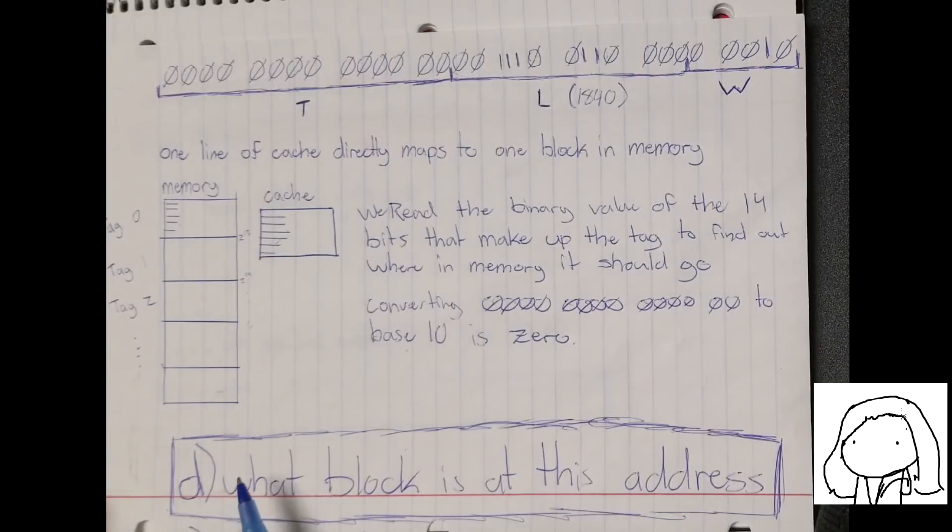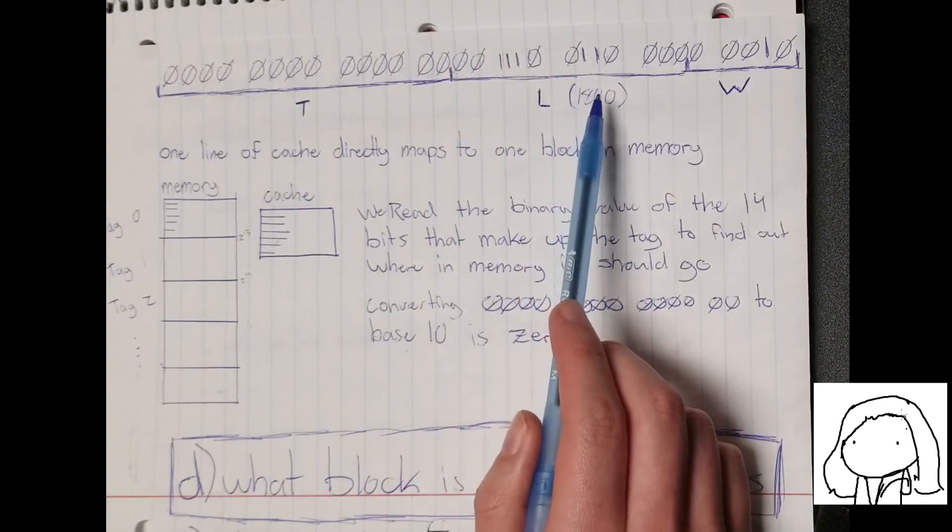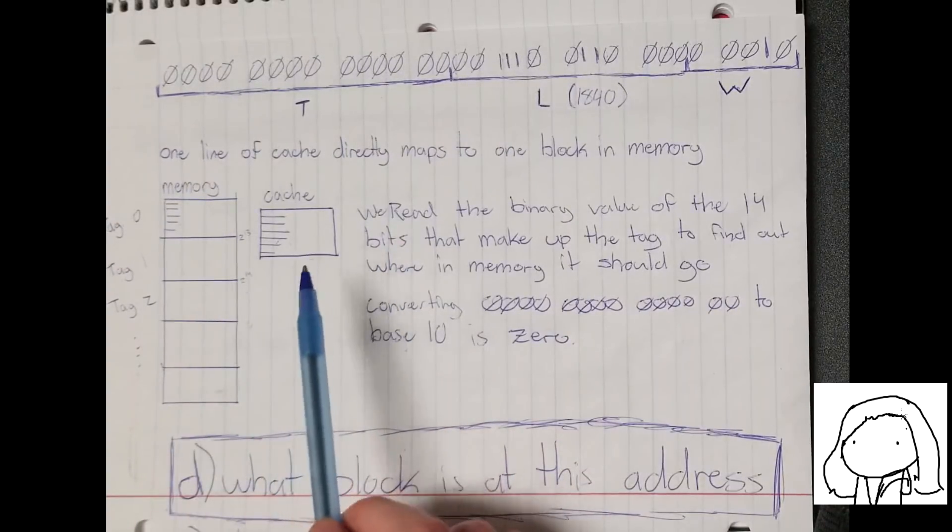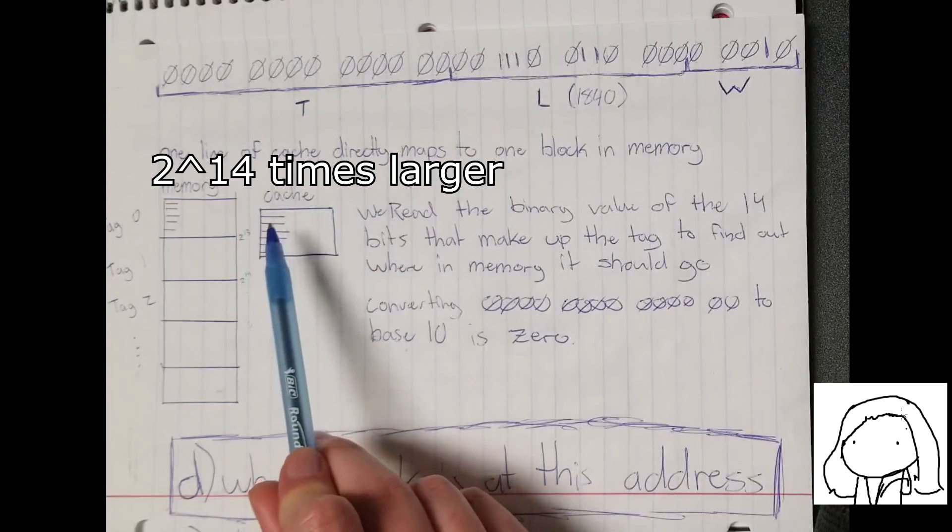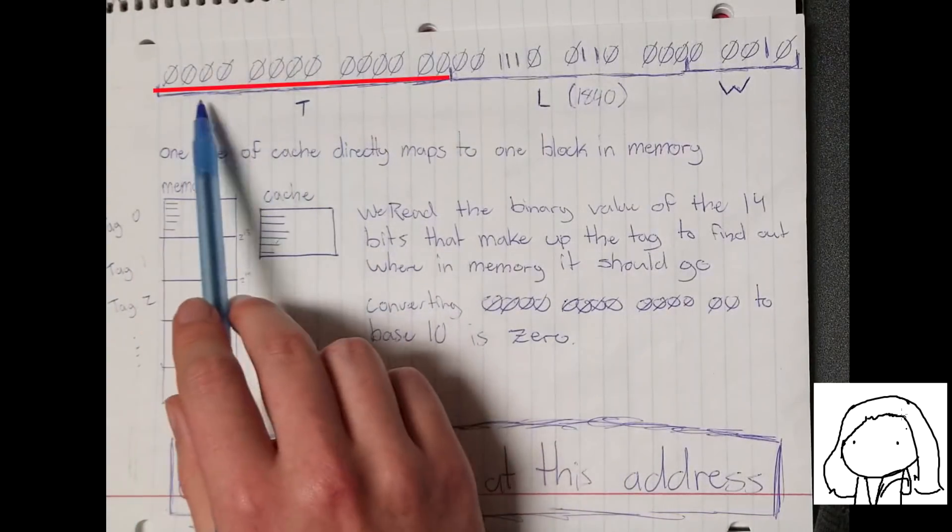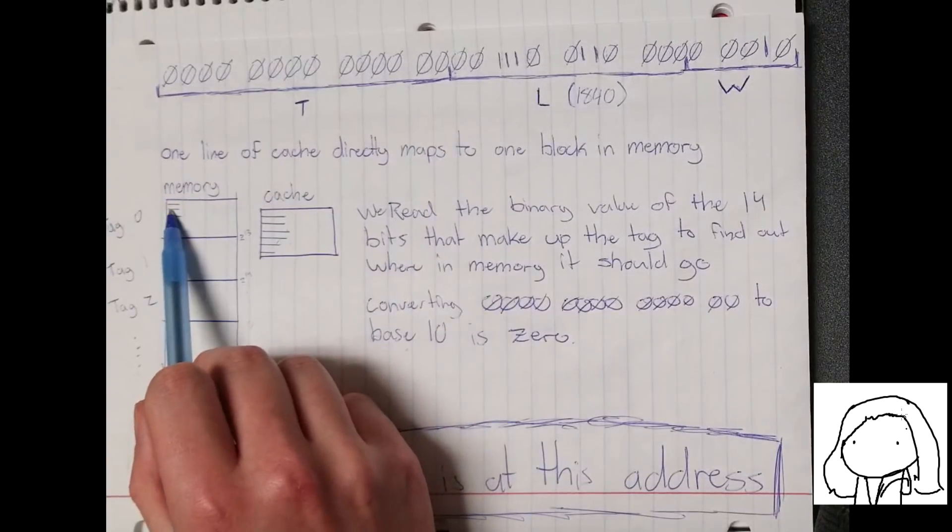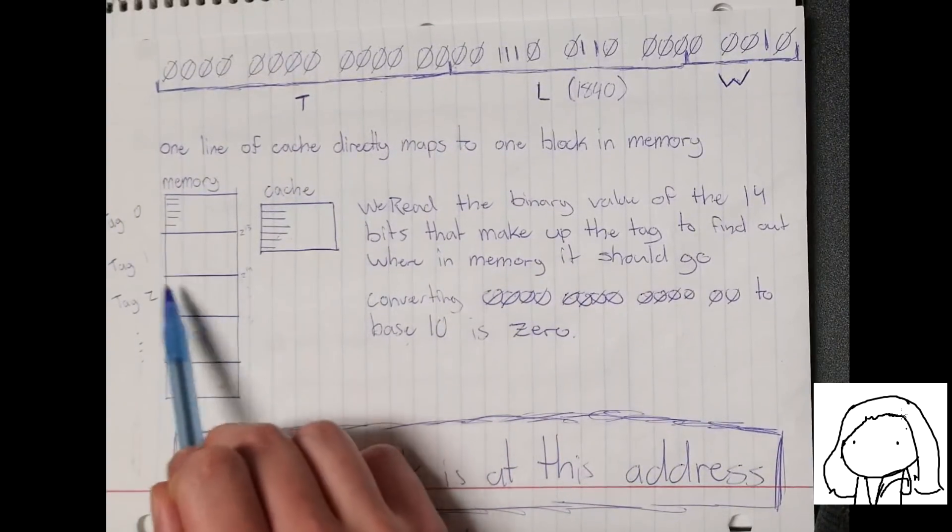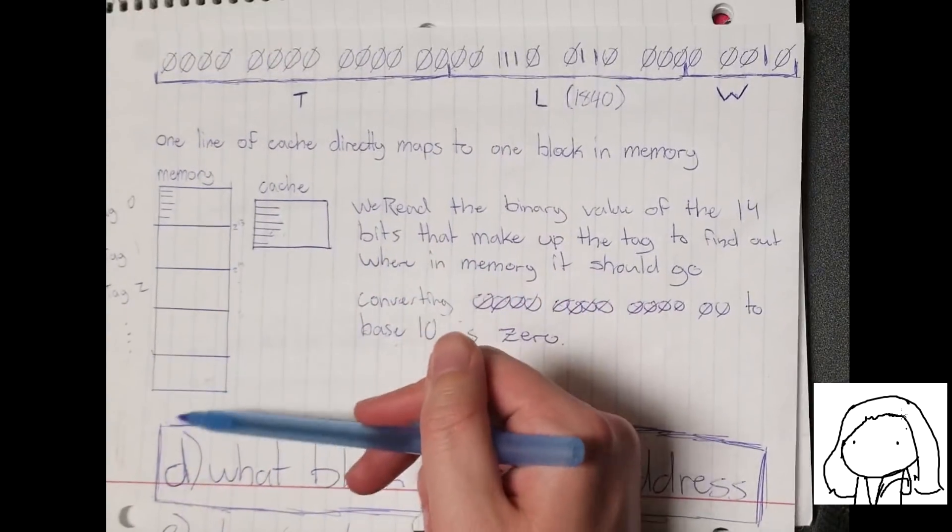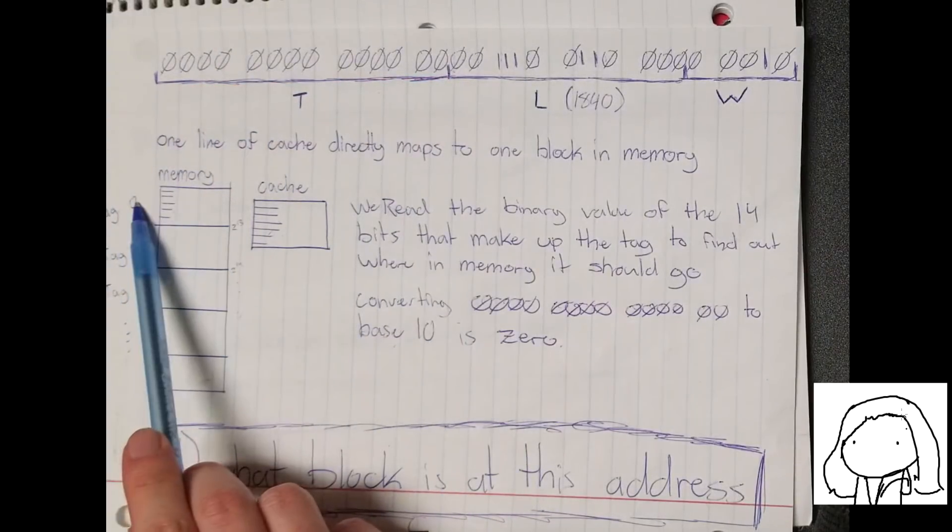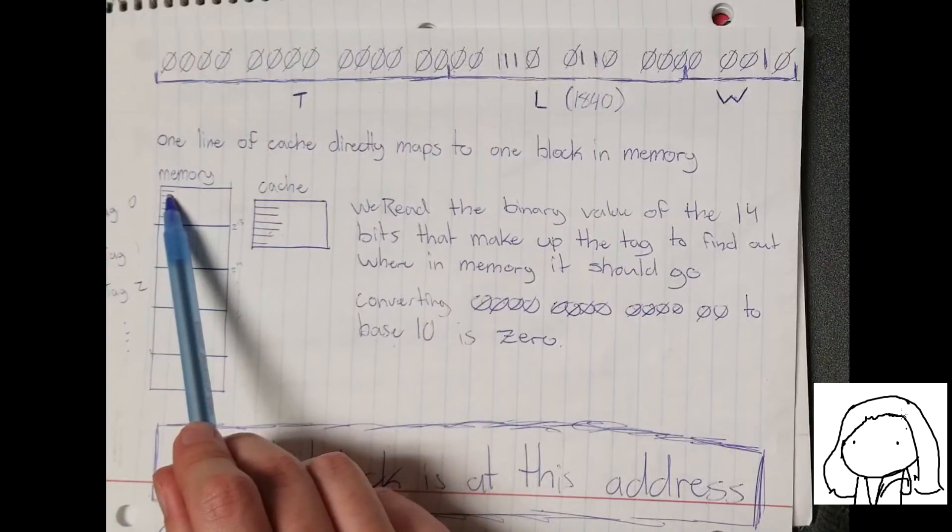Okay, so now we're going to find out what block is at this address that we were given. So one line of cache directly maps to one block in main memory. So we know our line was 1,840. So we know it's the 1840th block in main memory, if the cache was the same size as the memory. But unfortunately, our cache is a lot smaller. Our memory is actually 2 to the 14 times larger than our cache, because our tag here is 14 bits. So we say this line is line 1840. We could say, is it this block here, 1840? Or is it this block here, or here, or here, or here? And so we know which section of memory it is by looking at the tag. So our tag here is all 0s. So easily in base 10, that's just 0. So we know we're in this first section right here at tag 0. So we're going to be at block 1840, the same number as the line. And so for question E, what is our tag in base 10? Again, all 0s in binary is just 0 in base 10.